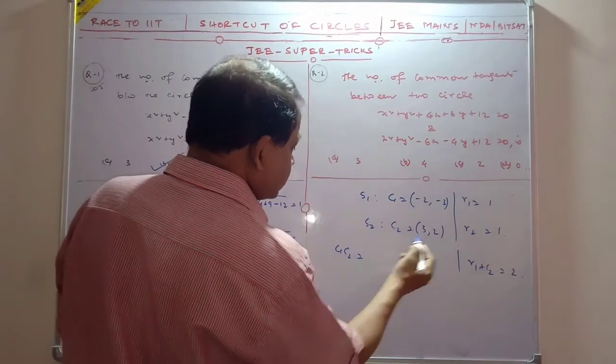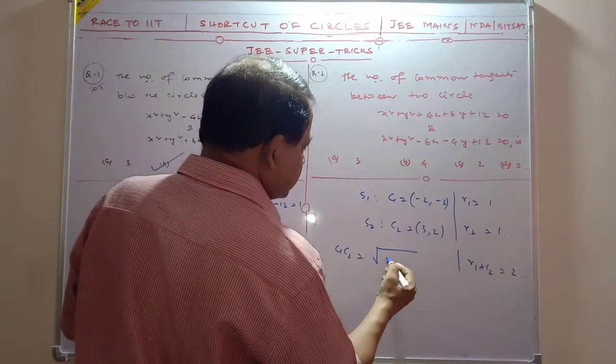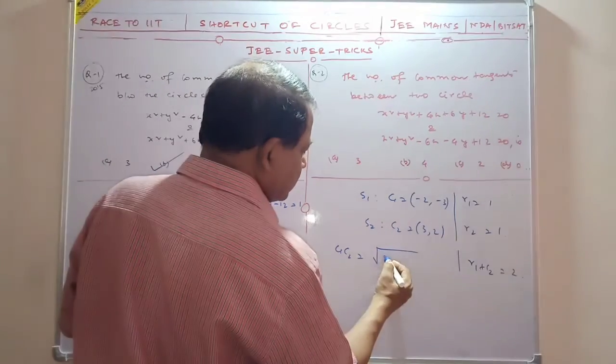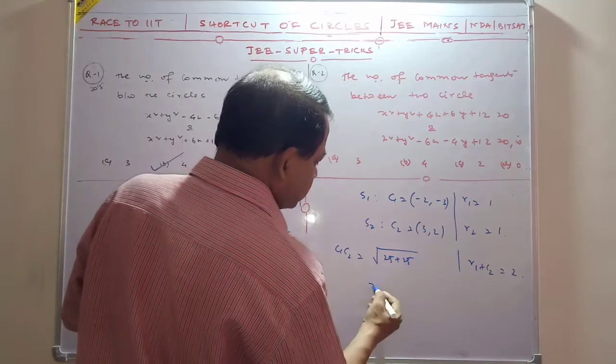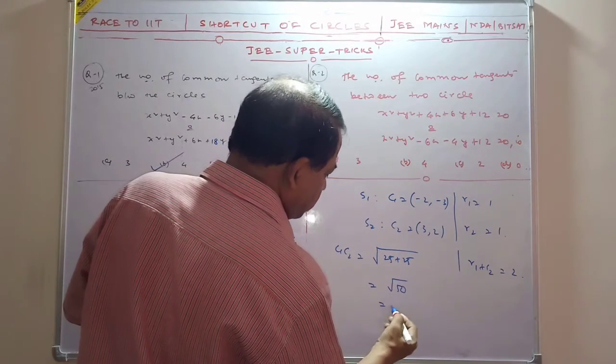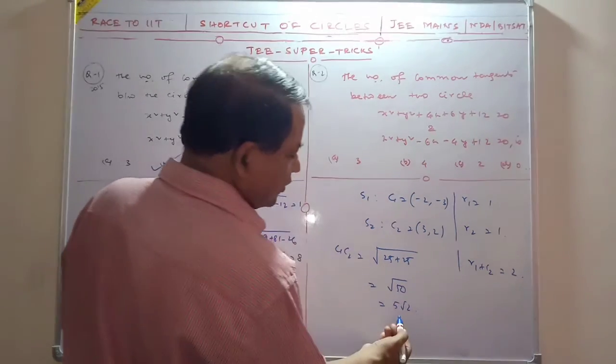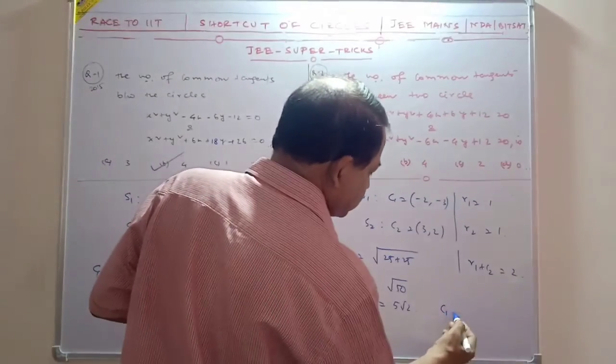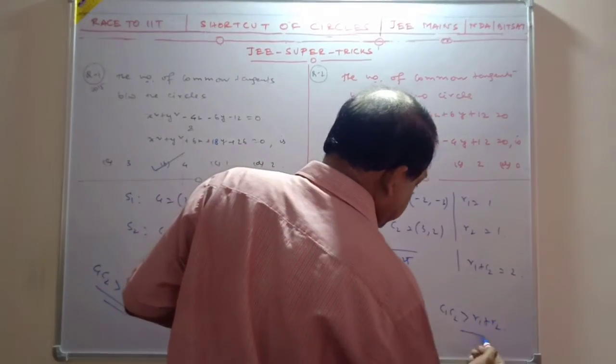And C1C2, what is C1C2? This is 25 plus 25, so that is root 50. Root 50 means 5 root 2. So in this case also, therefore C1C2 is more than R1 plus R2.